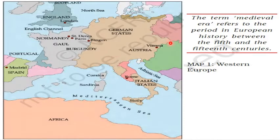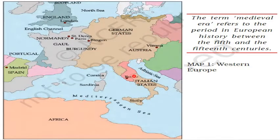Now this is the map of Western Europe, showing Spain, Germany, Vienna, Austria, and Rome among the Italian states. The term 'medieval era' refers to the period in European history between the 5th and the 15th century. This is called the medieval period in Europe.